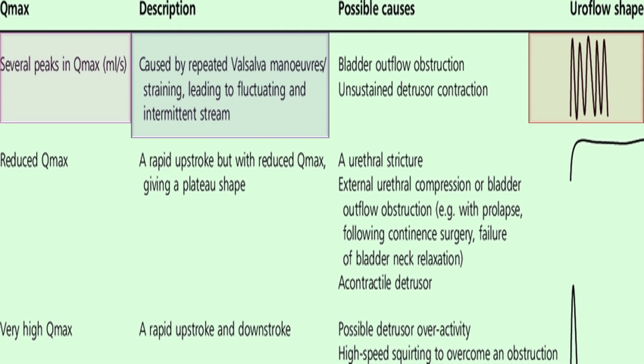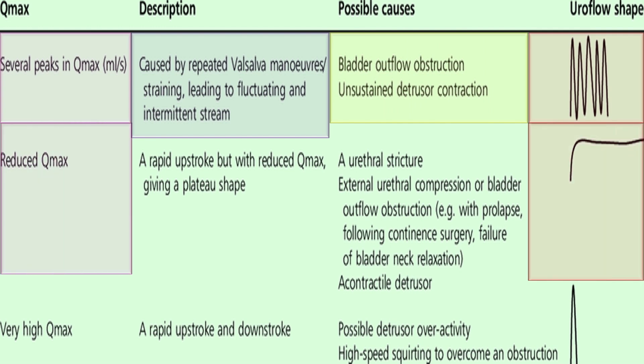Possible causes include bladder outflow obstruction and unsustained detrusor contraction. In the second pattern, we have reduced Qmax with a rapid upstroke but with the reduced Qmax giving a plateau shape.